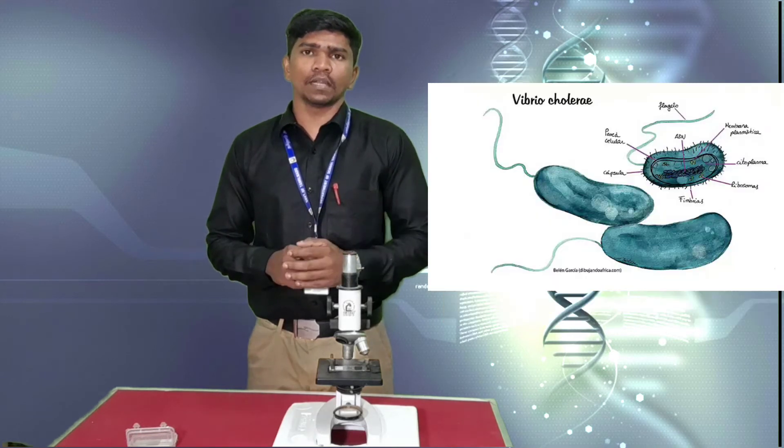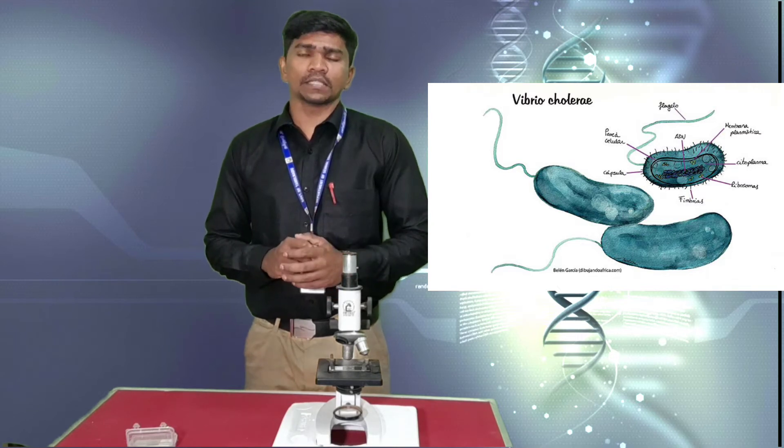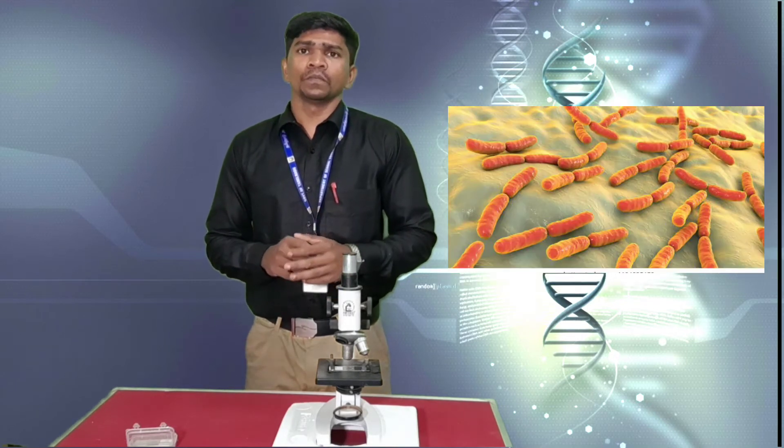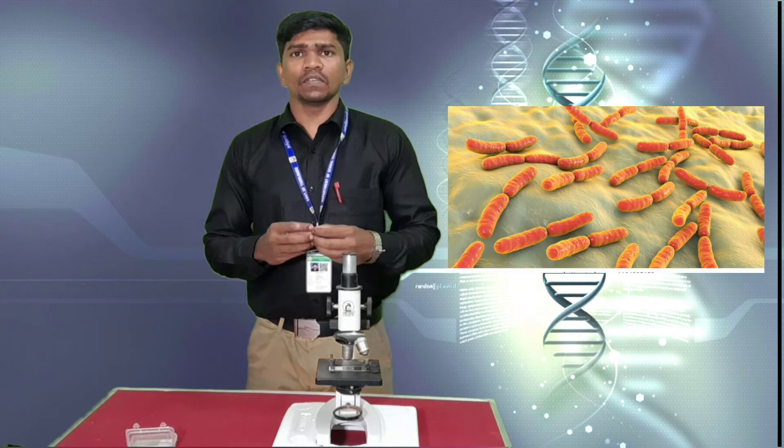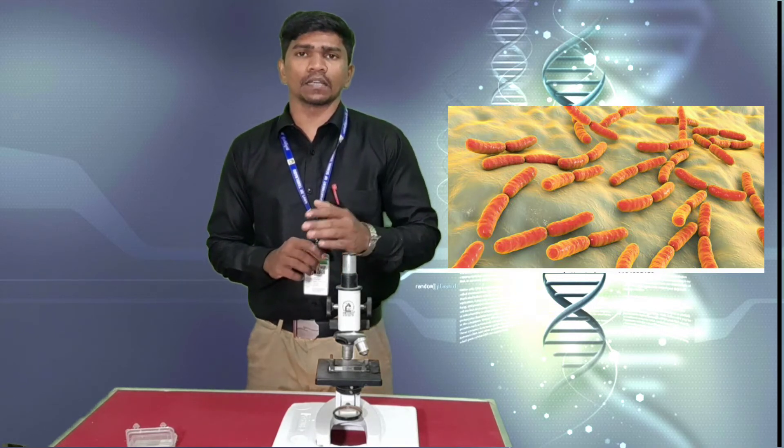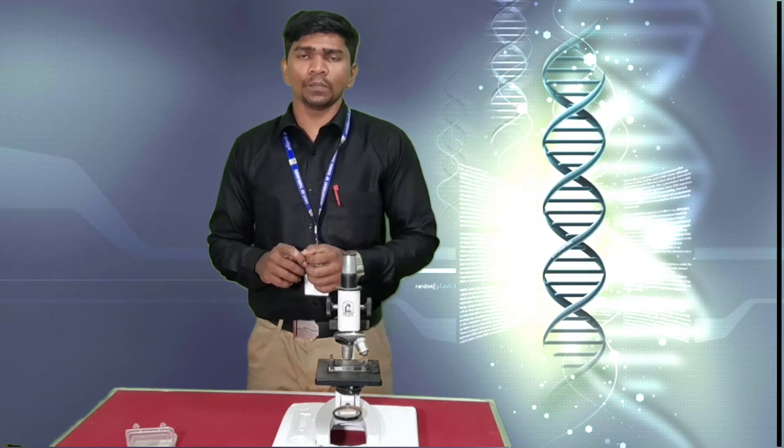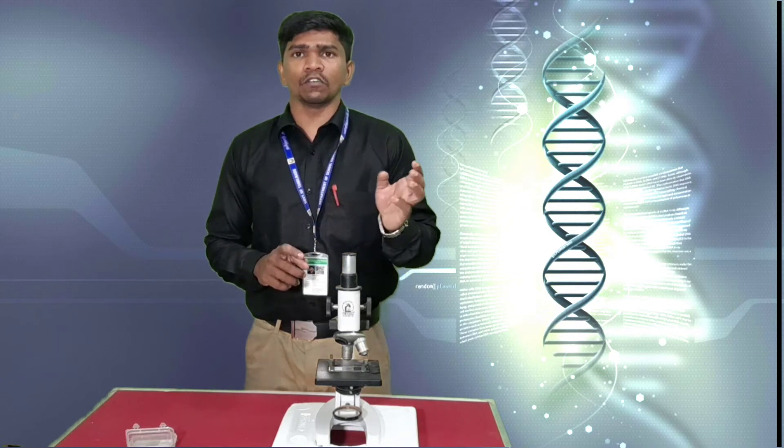Then we have Vibrio cholerae which is comma shape, which is causing cholera. Third one is Lactobacillus which is without any flagella, which is always in the form of chain. Both are in rod shape, but Vibrio cholerae is comma shape. Escherichia coli and Lactobacillus both are rod shape, but E. coli has flagella while Lactobacillus has no flagella.